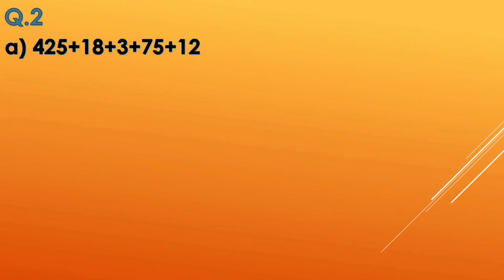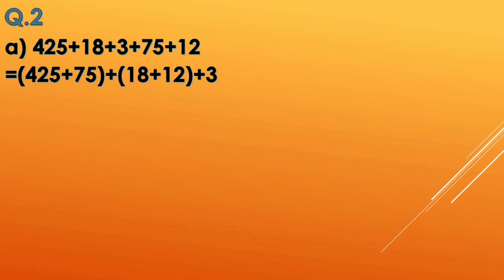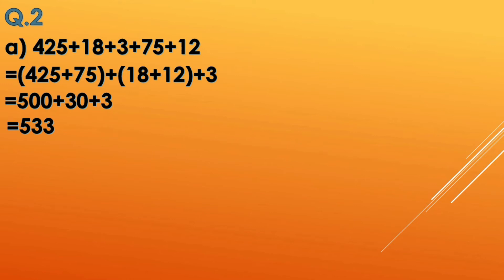Moving to question 2 — using commutative or associative property we need to solve these questions. In the first question we need to make a smart group that comes to the nearest 10 or 100. So 425 pairs with 75 to make 500, and 18 pairs with 12 to make 30, leaving 3 alone. The total answer is 425 plus 75 equals 500, plus 18 plus 12 equals 30, plus 3 — giving 533.